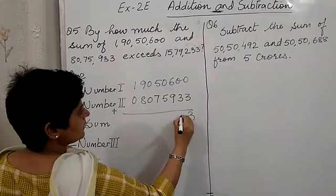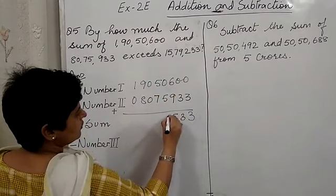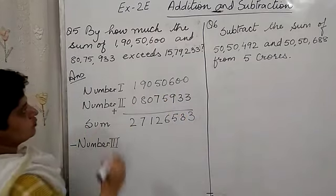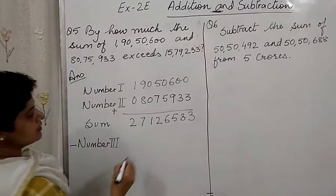Sum is 2, 7, 1, 2, 6, 5, 3, 3. Now we have to subtract the third number.